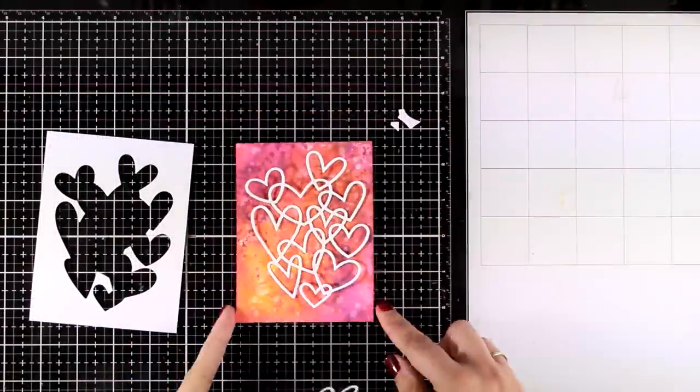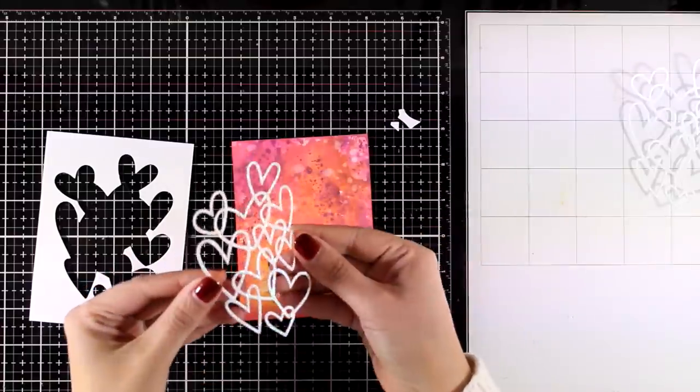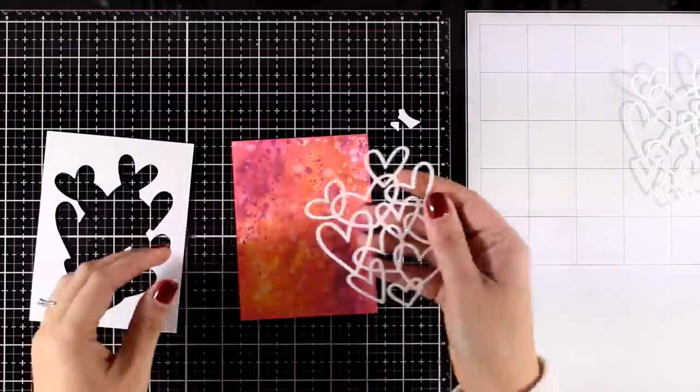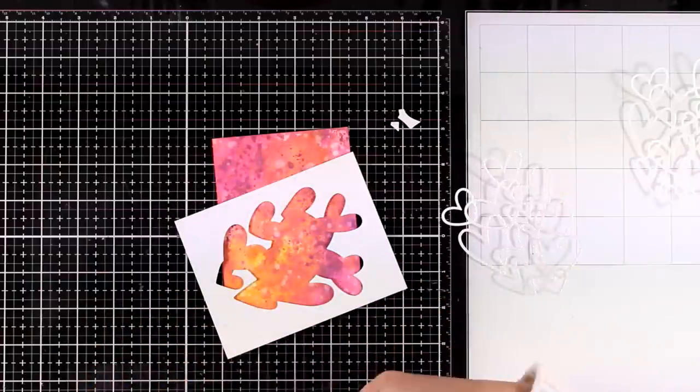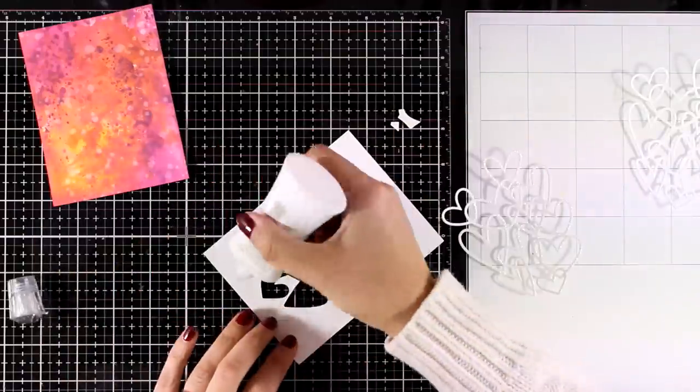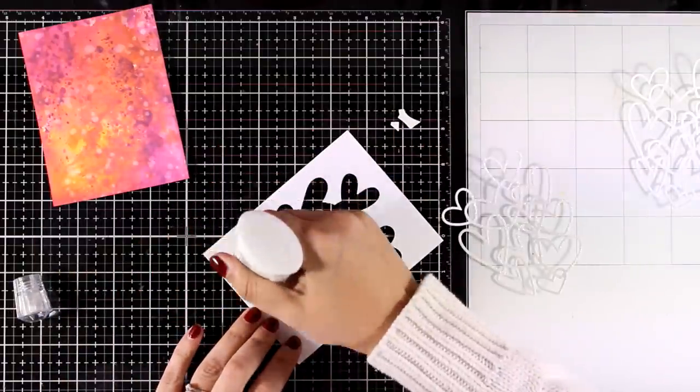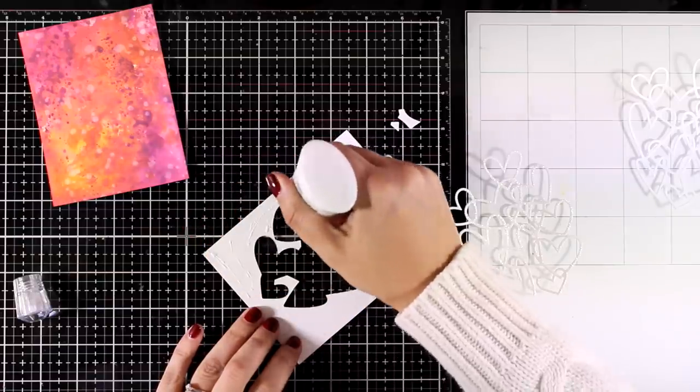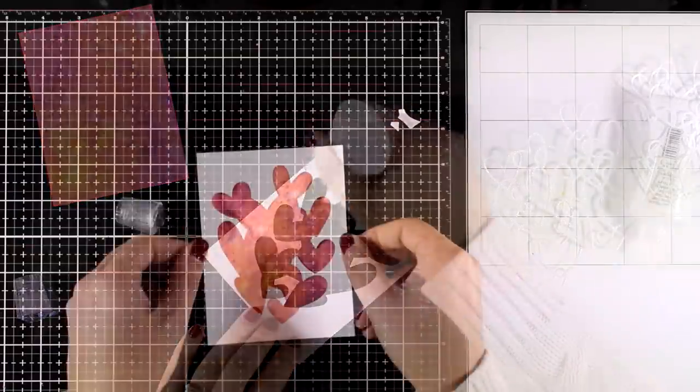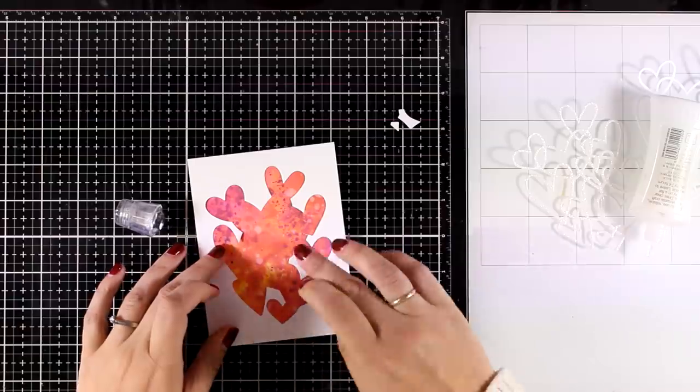Now you can just stick the outline on top of this gorgeous background and you have a card there. However, I cut out the outline one more time out of glitter cardstock, so only the outline is made out of glitter now. I am going to stick all those pieces together. They are going to fit one inside the other like a puzzle.